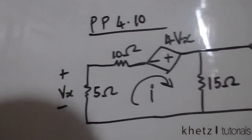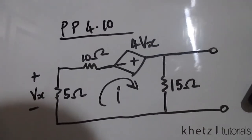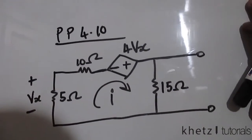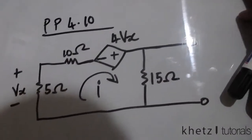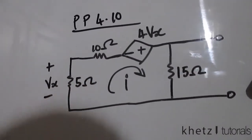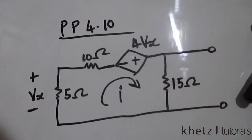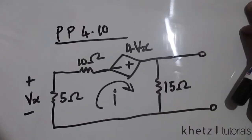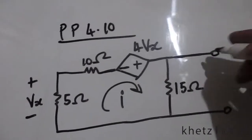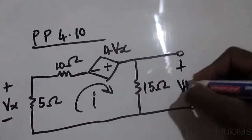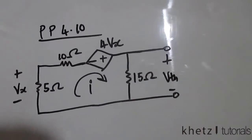Welcome to Cat's Tutorials. In this video we'll be covering practice problem 4.10, where we are asked to find the Thevenin equivalent of this circuit. Let's start by finding Vth, which is the open circuit voltage across the terminals.